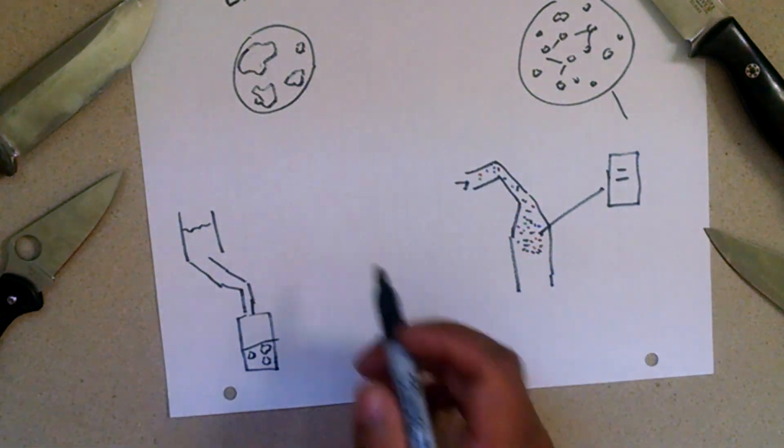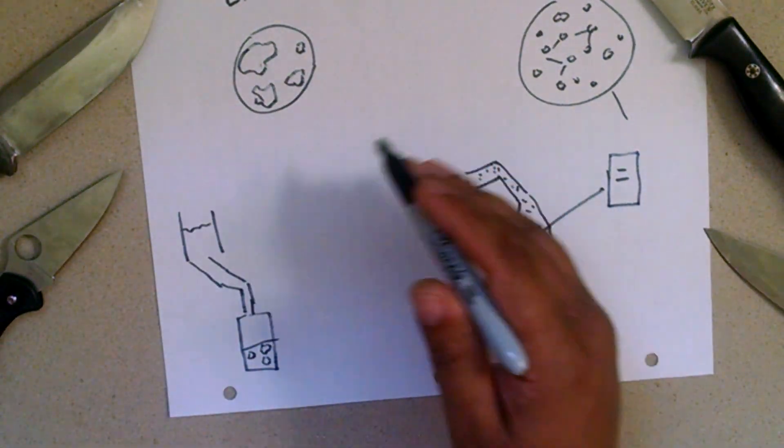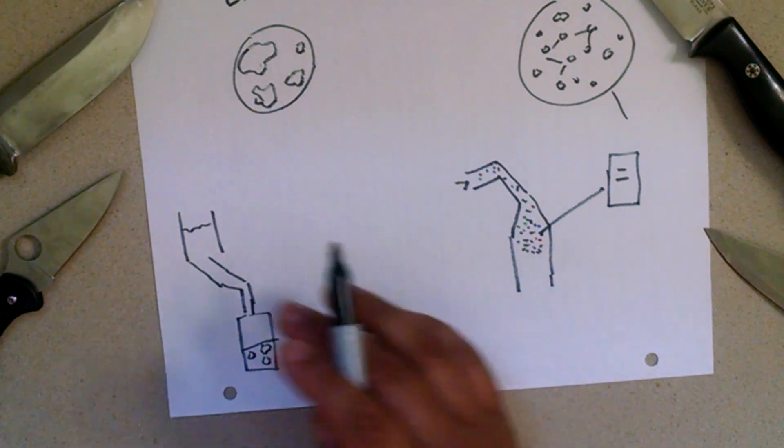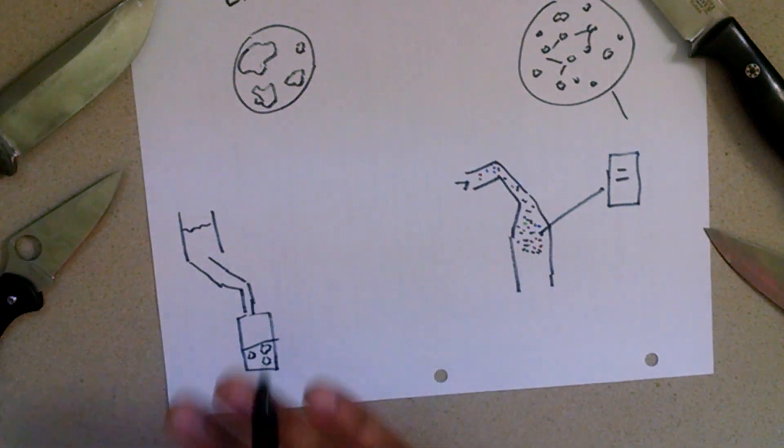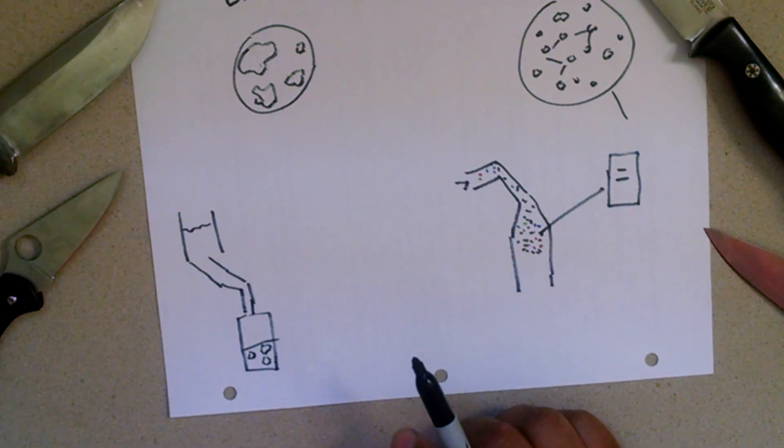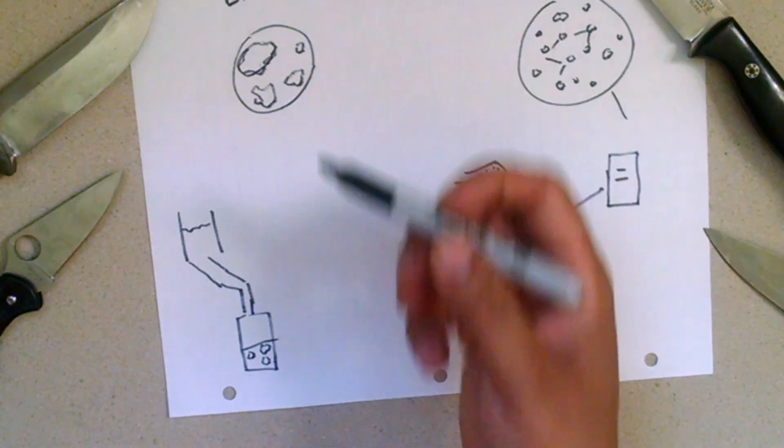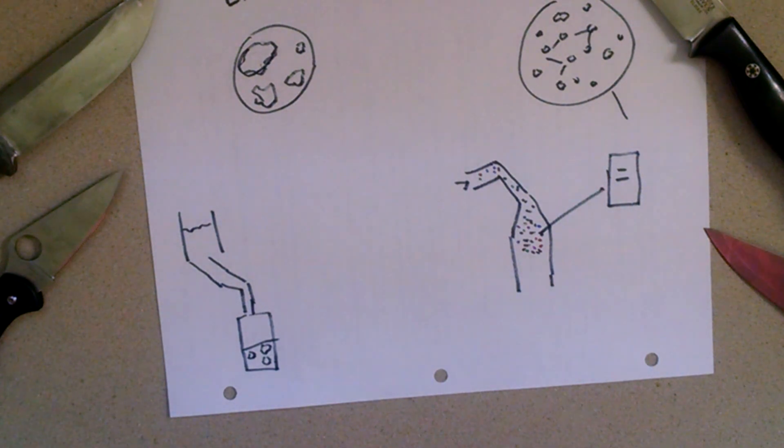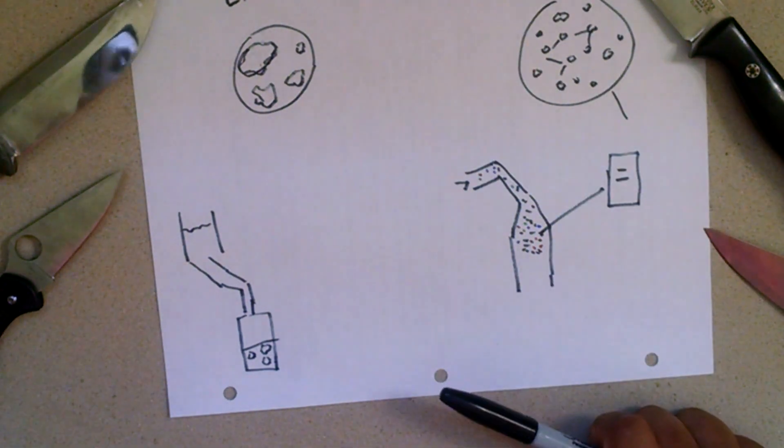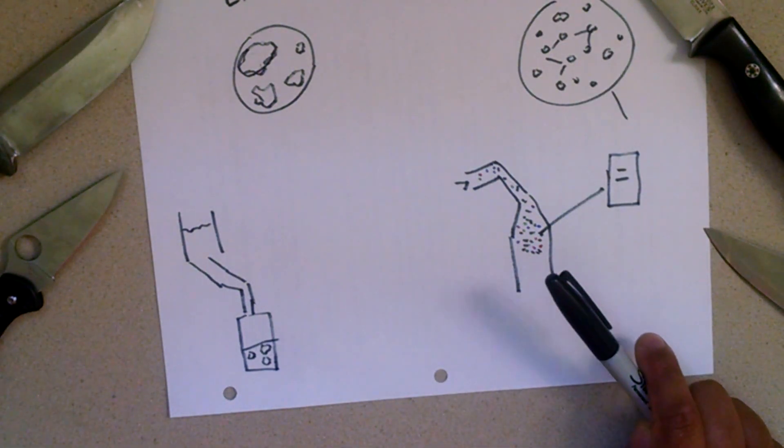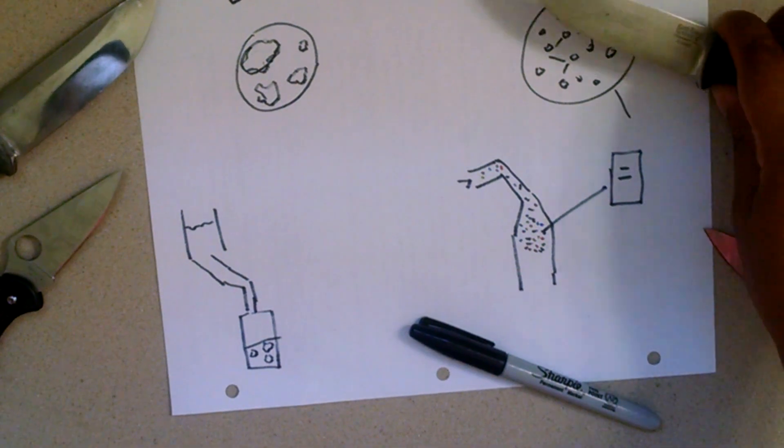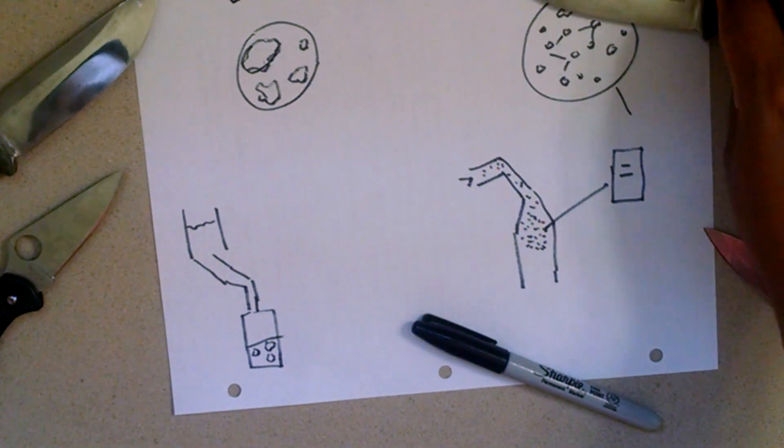And sure, with heat treatment, you can move around the furniture, so to speak, in the steel. You can help kind of disperse this stuff. There's only so much you can do, though. And with some of these huge clumps right here, there's just not much you can do even with heat treatment. So that's where the PM process really shines, is that these hard packets of alloying are just simply not allowed to clump up.